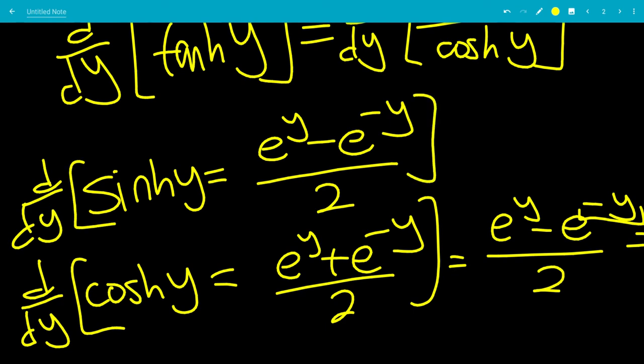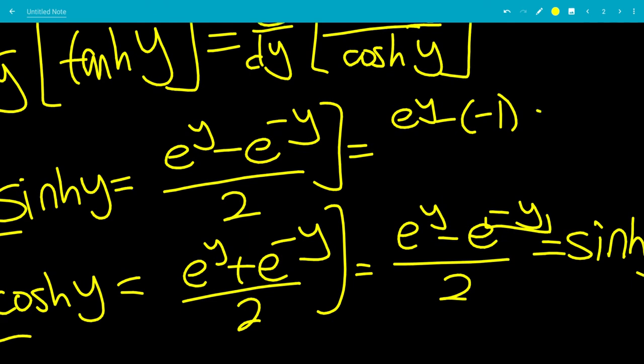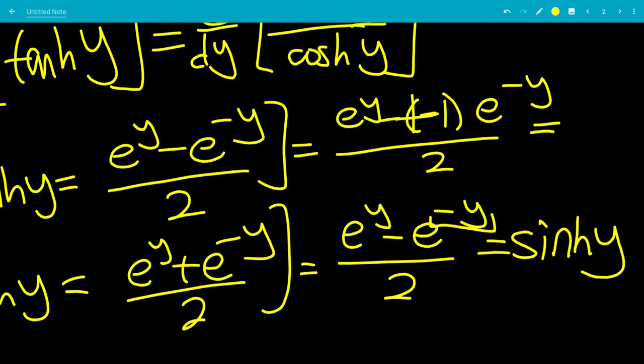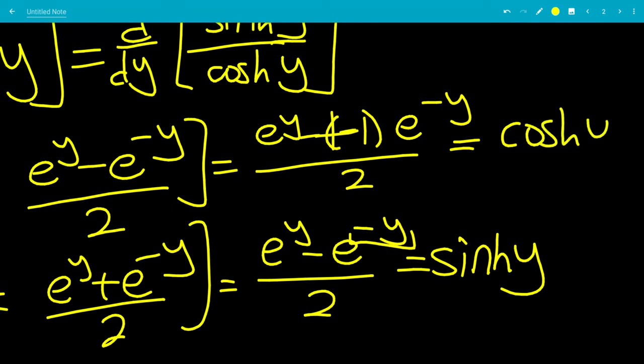Similarly, for sinh of y we get e to the y minus negative 1 times e to the minus y all over 2, which is plus, so that turns into cosh of y. So the derivative of sinh of y is cosh of y, and the derivative of cosh of y is sinh of y. That is different from the trig functions, because the derivative of cos x is negative sin x.